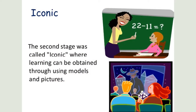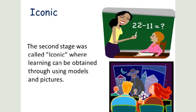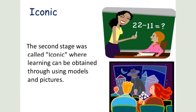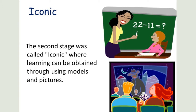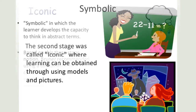The next mode of representation is the iconic stage. This stage is where information is stored visually in the form of images. For example, when learning a new subject, it is often helpful to have diagrams or illustrations to accompany verbal information.